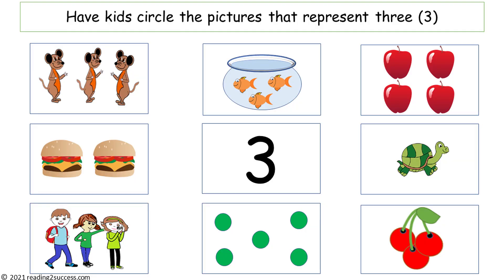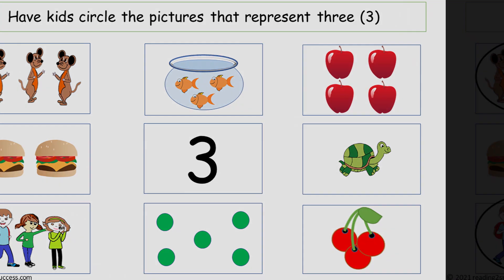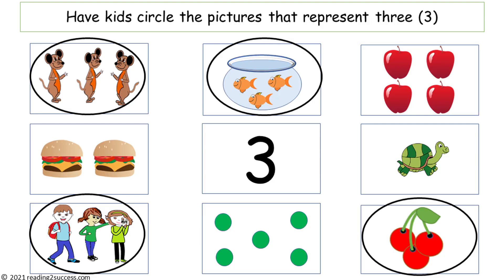Have kids circle the pictures that represent the number 3. They are three mice, three fish, three kids, and three cherries.